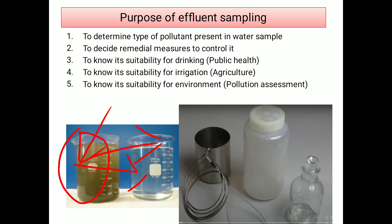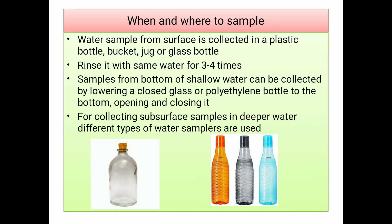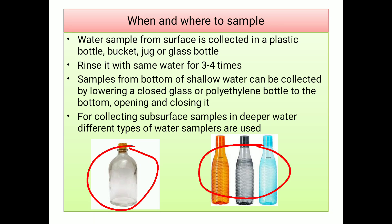These are the things which are used for collection of effluent water. When and where to sample — water samples from the surface are collected in a plastic bottle, buckets, or glass bottle. Simply, these kinds of bottles can be used for the collection of effluent water from the surface area. For that purpose, the procedure is to rinse the container with the same water three to four times.